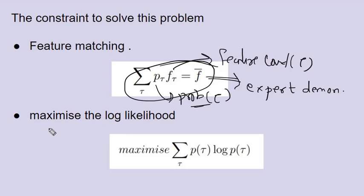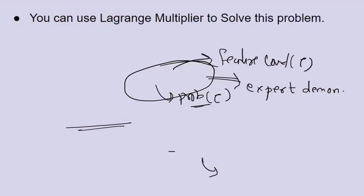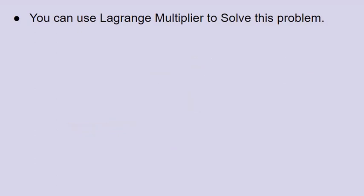The second requirement is to maximize the log likelihood, which means we maximize the probabilistic distribution over trajectories. We can solve this optimization using Lagrangian multipliers. I'm now going to go through some math to show how these equations are obtained from the constraints and the objective.